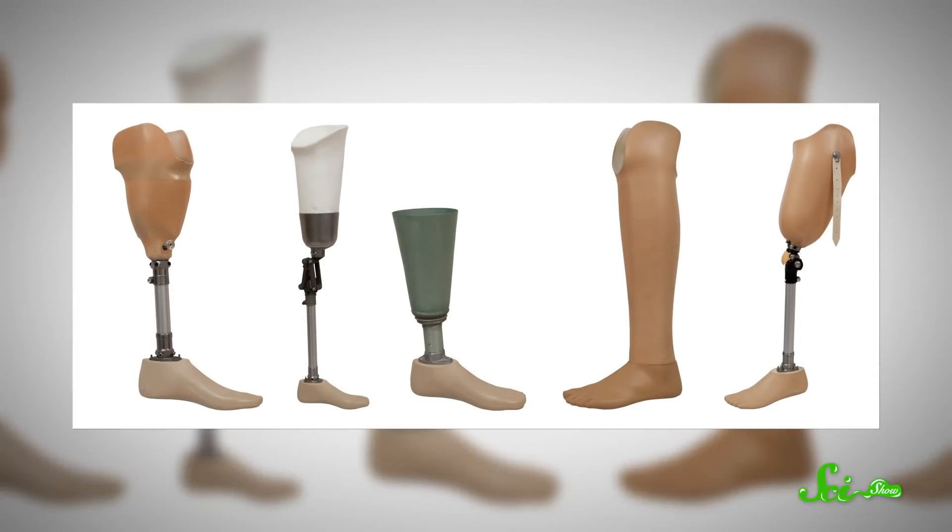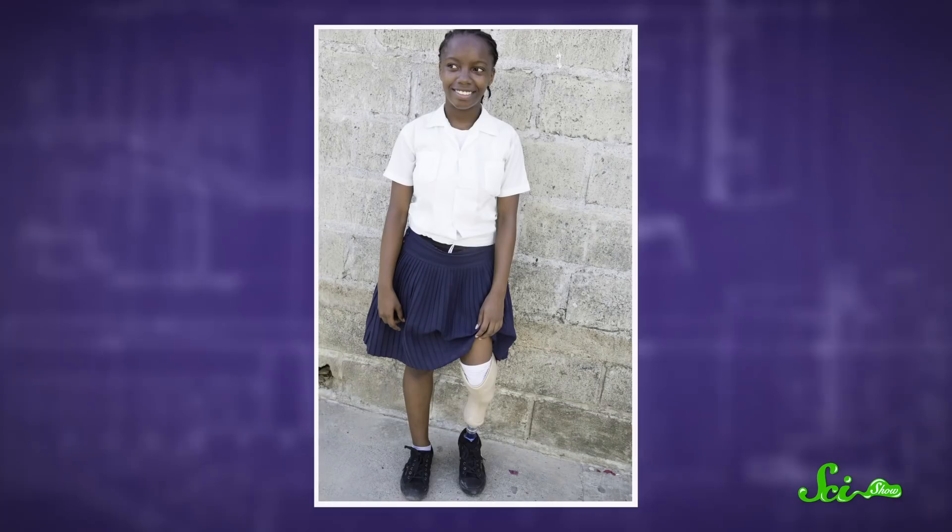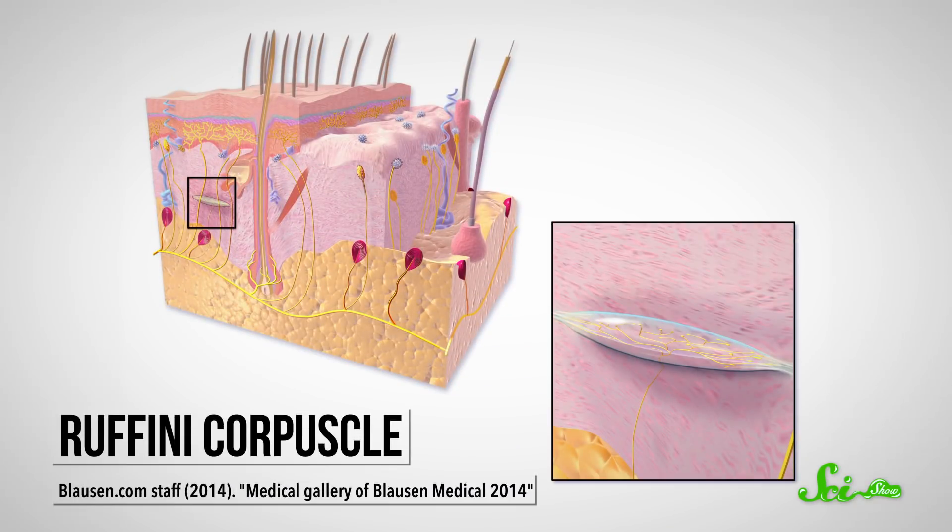Most prosthetic devices are attached with a socket held in place with a harness or suction. Harnesses limit the range of motion, and the suction of the socket activates the ruffini corpuscles, which are mechanoreceptors that are sensitive to stretching skin. That's why prosthetic limbs can feel like they're hanging onto the body instead of connected to it.